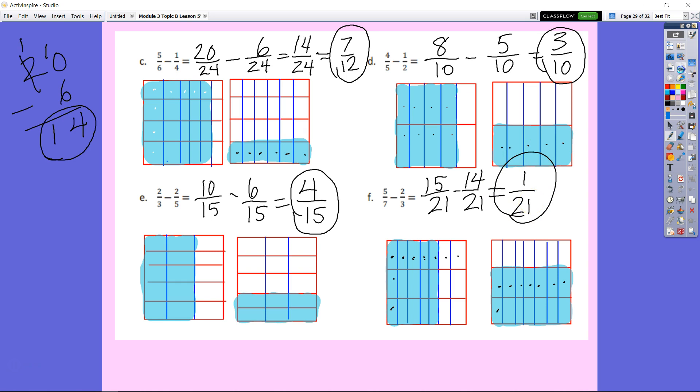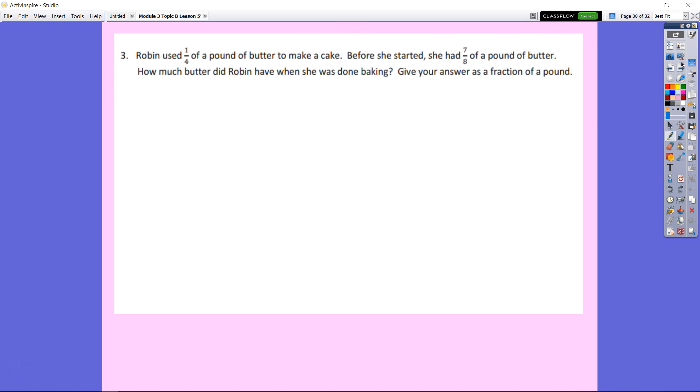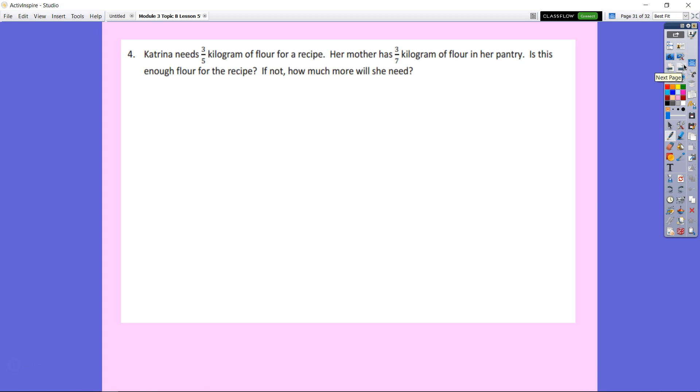Now, let's see who can answer this right here. Robin used 1 fourth of a pound of butter to make a cake. Before she started, she had 7 eighths of a pound of butter. Give your answer as a fraction of a pound. So, you have to give your answer as a fraction of a pound, and it has to be in simplest form. Let's go ahead and push that to the next level. And 4. Katrina needs 3 fifths of a kilogram of flour for a recipe. Her mother has 3 sevenths kilogram of flour in her pantry. Is this enough flour for the recipe? If not, how much more will she need? So, if it's not, which it probably isn't, you've got to figure out how much more she needs.